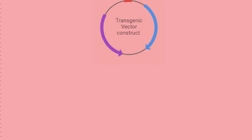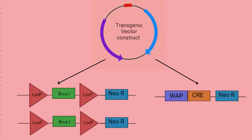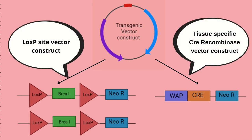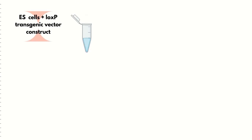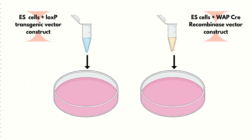There are two vector constructs used. One contains homozygous LOX P sites flanking the BRCA1 gene with a neomycin resistance marker, and the second contains a homozygous Cre recombinase gene with a tissue-specific promoter WAP, tied up with the neomycin resistance marker. You plate these two cells on a Pepro-Gro medium infused with antibiotic G418.